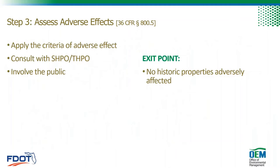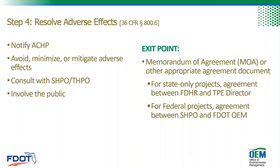In Step 3 we assess adverse effects by applying the criteria of adverse effect, and we consult with DHR and involve the public. If we determine that the project will have no adverse effect and DHR concurs, we're done. If our project will have an adverse effect, we attempt to resolve them in Step 4. In Step 4 we consult with DHR and any other consulting parties to develop minimization or mitigation measures to resolve adverse effects, and we record them in an MOA — a Memorandum of Agreement — or other appropriate agreement document. An executed MOA evidences completion of the Section 106 or Chapter 267 compliance process, even if stipulations can't be completed until after construction. Those stipulations should be recorded as commitments in the project commitment record and the commitment section of the environmental document.